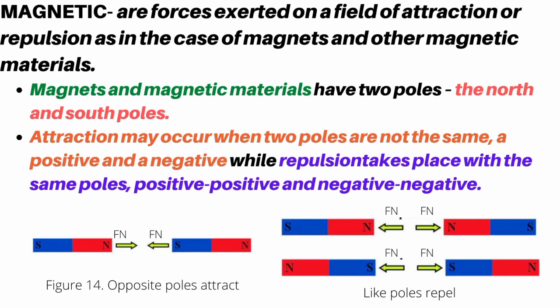Magnetic force are forces exerted on a field of attraction or repulsion as in the case of magnets and other magnetic materials. Magnets and magnetic materials have two poles, the North and South poles. Attraction may occur when two poles are not the same, a positive and a negative, while repulsion takes place with the same poles, positive-positive and negative-negative.